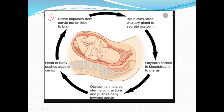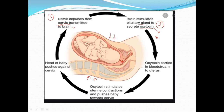Here, the first step of childbirth: nerve impulses from the cervix are transmitted to the brain. The cervix is the lower part of the uterus. When childbirth begins, the baby's head pushes out from the womb. The nerve impulses from the cervix send a message to the brain. In the second step, the brain stimulates the pituitary gland. We know that the pituitary gland is present in the brain, and it secretes oxytocin. When the pituitary gland is stimulated, it secretes oxytocin — oxytocin is a birth hormone.